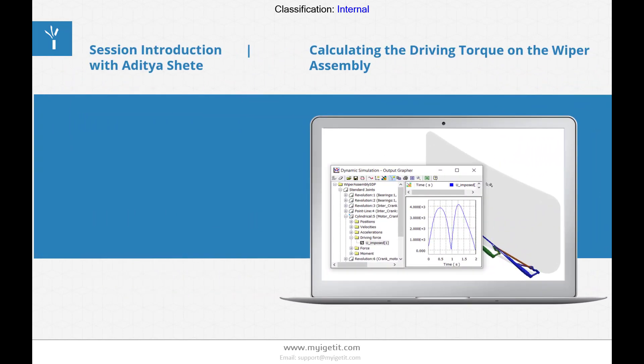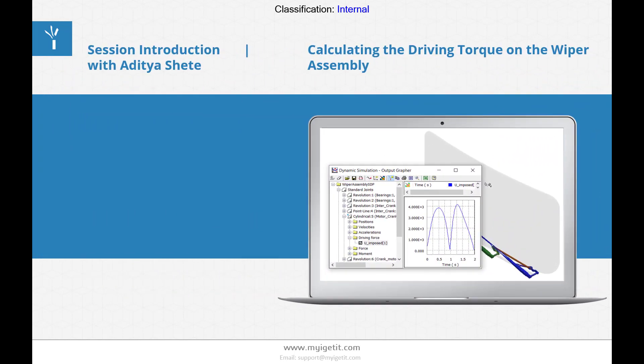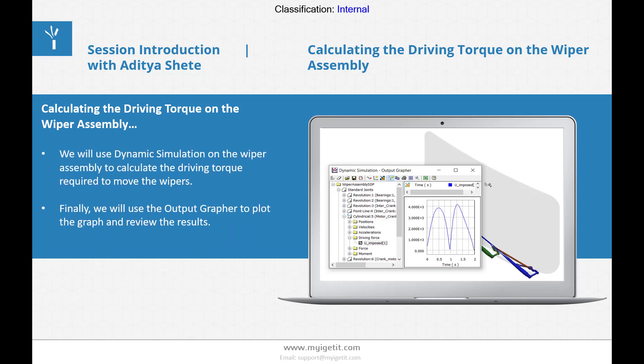Third topic is calculating the driving torque on the wiper assembly. In this, there are two points: we will use a dynamic simulation on the wiper assembly to calculate the driving torque required to move the wipers. Finally, we will use the output grapher to plot the graph and review the results.